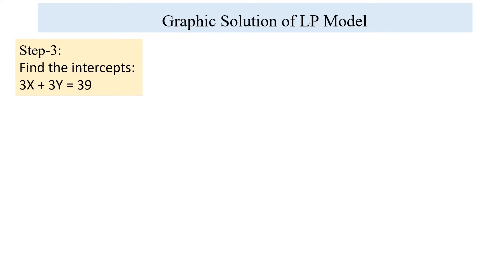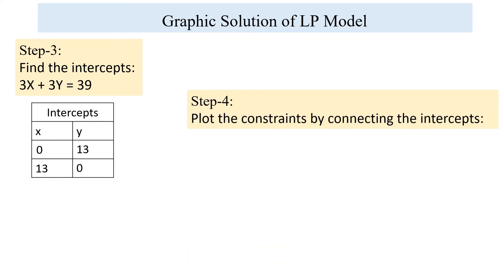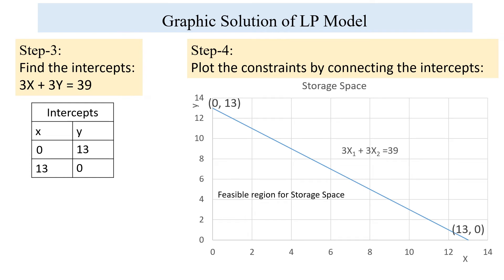Now we repeat the same step to find the intercepts and graph for the storage space constraint 3x plus 3y equals 39. When x equals 0, y equals 13; when y equals 0, x equals 13. We plot these points on the XY plane, connect them with a line, and shade the feasible region below the line. Here is the feasible region for the storage space constraint.